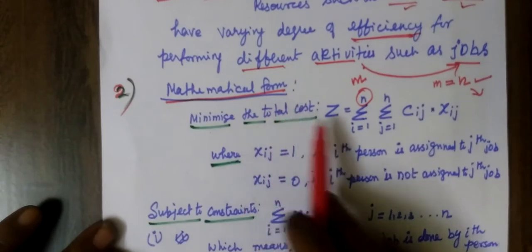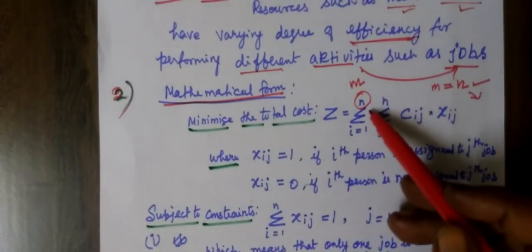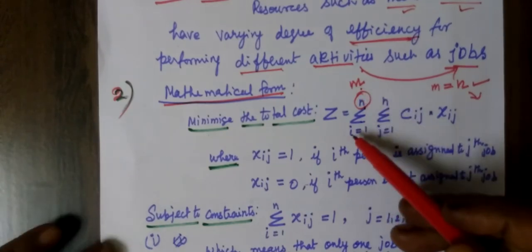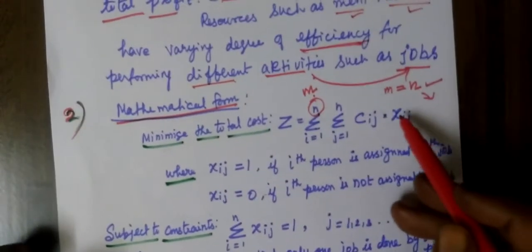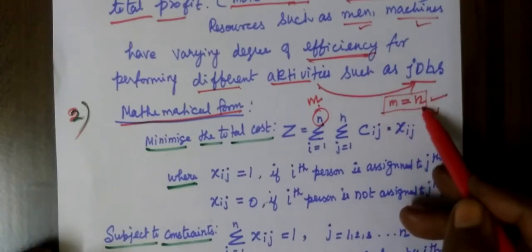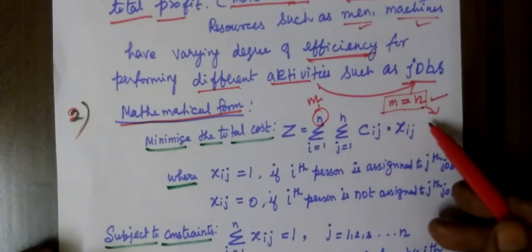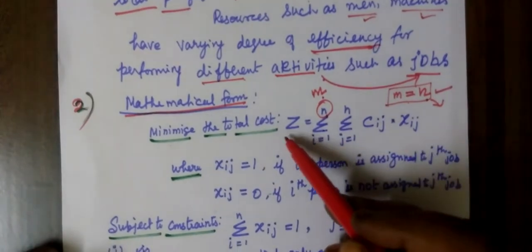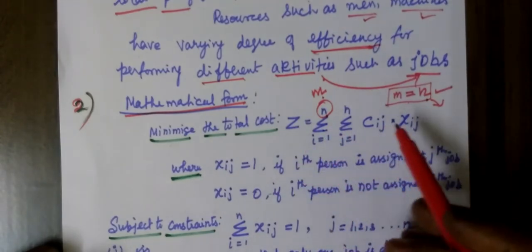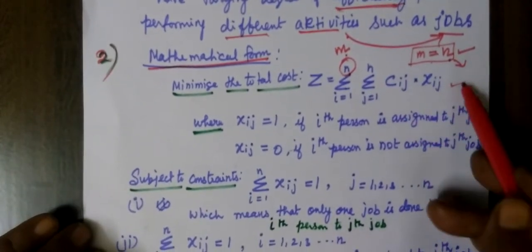What is the mathematical form? I am going to write here. In the mathematical formulation, the number of rows equals the number of columns. Resources equal destinations. The minimization cost is equal to sigma i=1 to n, sigma j=1 to n, of c_ij into x_ij.